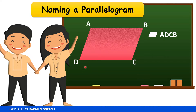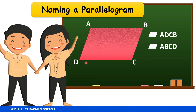We should always remember that we should use the consecutive vertices in naming a parallelogram. For example, we have parallelogram ADCB. So we use vertices that are in consecutive order. Another is parallelogram ABCD. Notice that we could arrange those vertices in clockwise or counterclockwise order. We use this symbol for parallelogram.